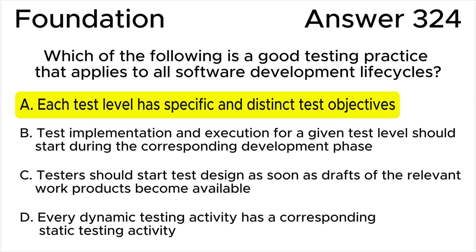According to the ISTQB syllabus, each test level has specific and distinct test objectives, as a different form of test object — for example, single components or a complete system — is tested at each test level. Overlapping test objectives would lead to unnecessary duplication.